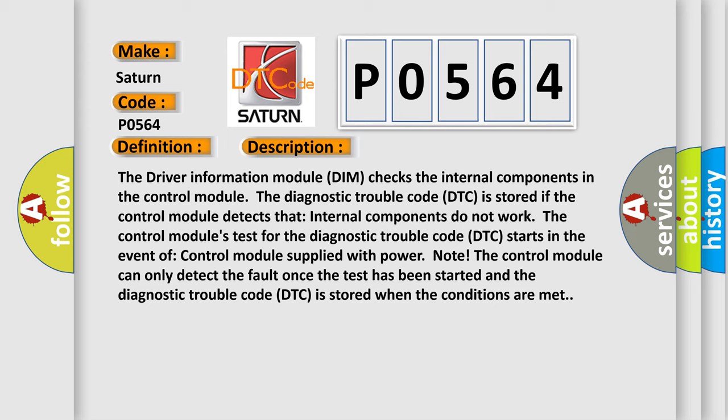The control module's test for the diagnostic trouble code (DTC) starts in the event of control module supplied with power. Note: The control module can only detect the fault once the test has been started and the diagnostic trouble code (DTC) is stored when the conditions are met.